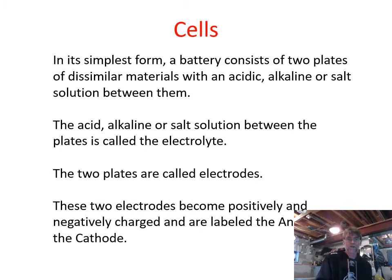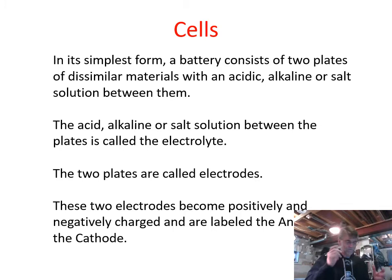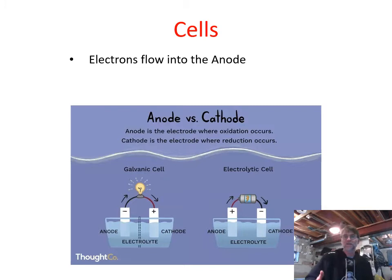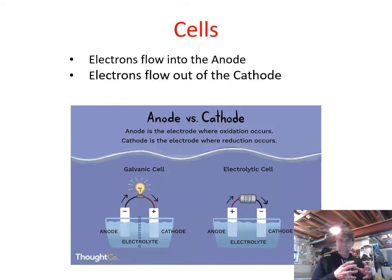The two plates are referred to as the electrodes. These two electrodes will become positively and negatively charged. A positively or negatively charged electrode we would label as an anode or a cathode. Now, which one is the positive terminal and which is the negative terminal? The answer is both — it depends on perspective. The two things everyone can agree on are: electrons flow into the anode, and electrons flow out of the cathode.